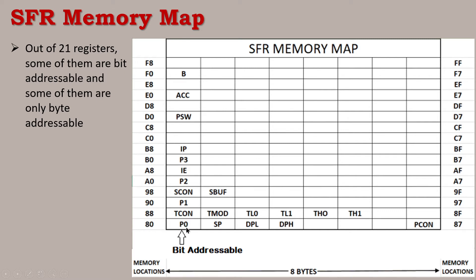Address 80H is Port 0. Address 81H is the Stack Pointer (SP). Data pointer lower bits (DPL) is at 82H, and data pointer higher bits (DPH) is at 83H. Power control register (PCON) is at 87H. Timer control (TCON) is at 88H. Timer mode (TMOD) is at 89H. Timer 0 lower bits (TL0) is at 8AH. TL1 is at 8BH. TH0 (Timer 0 higher bytes) is at 8CH. Timer 1 higher bits (TH1) is at 8DH. 8EH and 8FH are empty space.